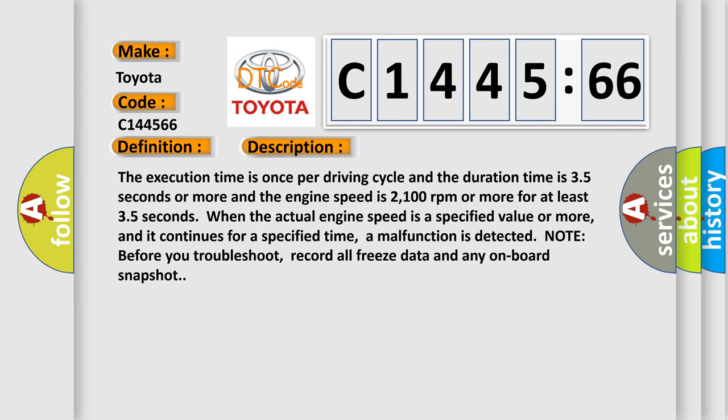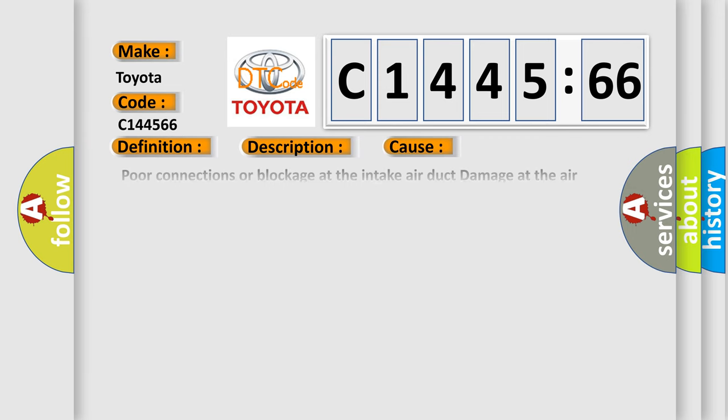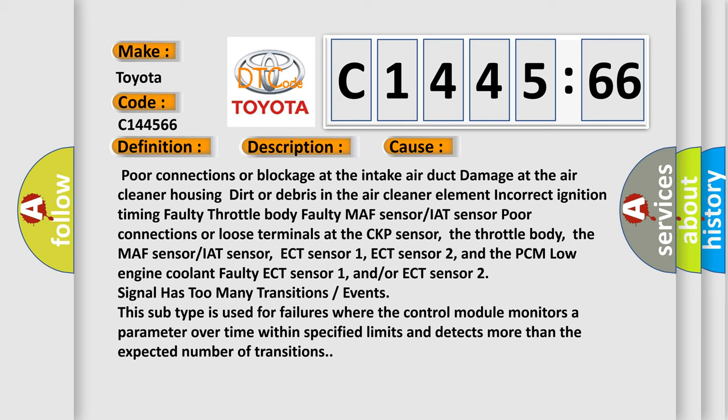The execution time is once per driving cycle and the duration time is 3.5 seconds or more and the engine speed is 2100 revolutions per minute or more for at least 3.5 seconds. When the actual engine speed is a specified value or more and it continues for a specified time, a malfunction is detected. Note: before you troubleshoot, record all freeze data and any onboard snapshot.